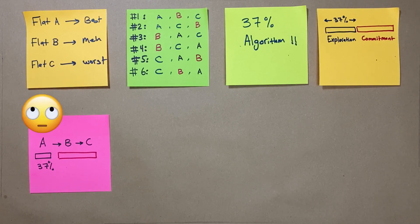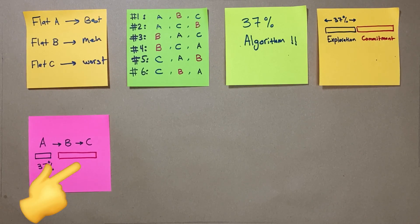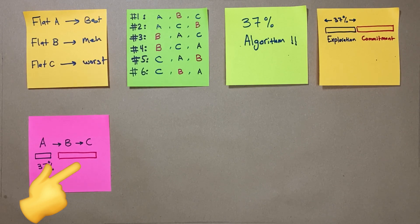Since flat A is presented to Ted first, he can't choose it as part of the exploration phase. After assessing flat A, Ted enters the commitment phase. In this phase, Ted has to take the first option that is better than the best option from the exploration phase.